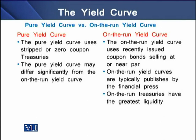What is the difference between the pure yield curve and the on-the-run yield curve? The pure yield curve uses stripped or zero coupon treasuries, whereas the on-the-run yield curve uses recently issued coupon bonds selling at or near par value. The pure yield curve may differ significantly from the on-the-run yield curve. On-the-run yield curves are typically published by the financial press, and on-the-run treasuries have the greatest liquidity for bond investors.